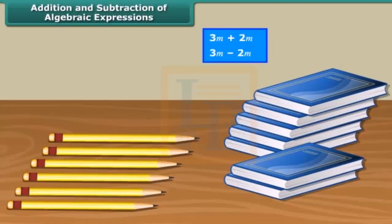However, if we remove one pencil from six pencils, then we are left with five pencils, but still we have the seven books. So, you can see it's quite similar with algebra. We can only add or subtract only similar objects.